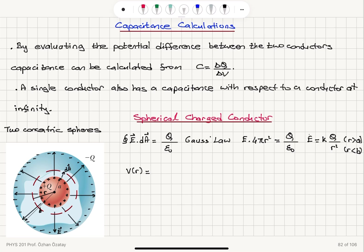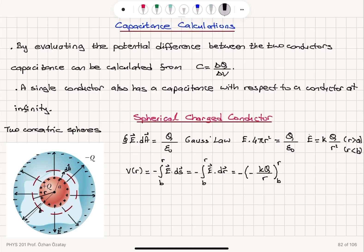The potential V(r) going from b to r equals minus the integral from b to r of E dot ds, where the ds vector is dr. This dr vector has a negative value since we're going from higher radius to lower radius. The integral of kQ over r squared dr gives minus kQ over r. So we have: V(r) equals kQ over r minus kQ over b, where b is the radius of the outer spherical conductor.